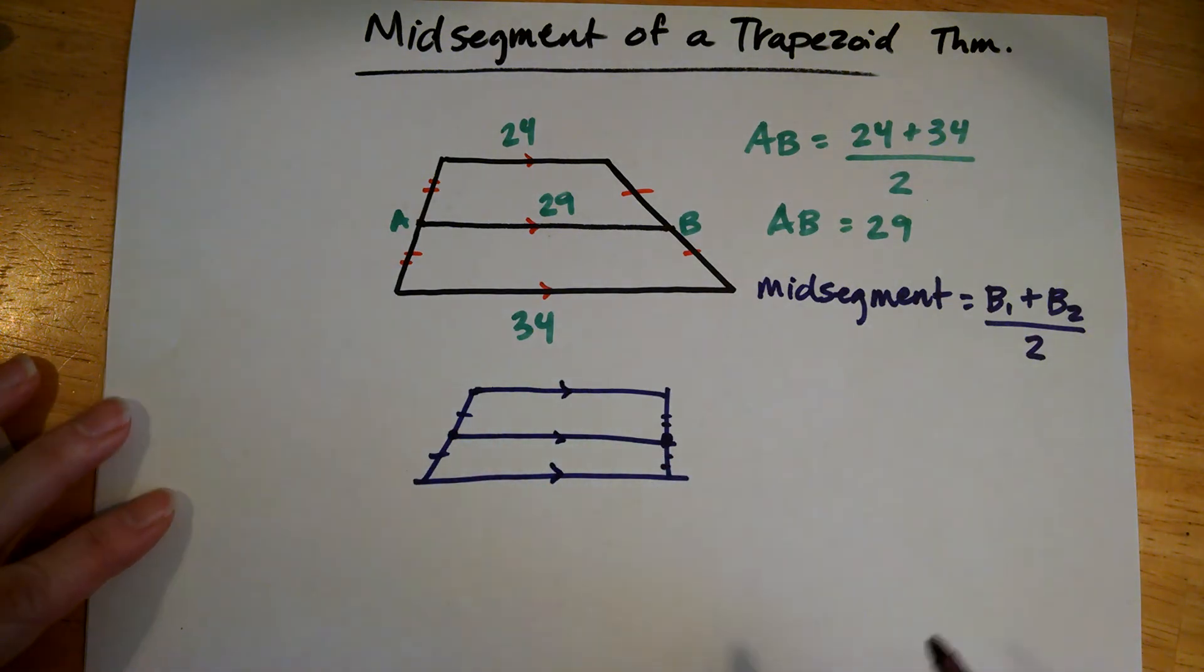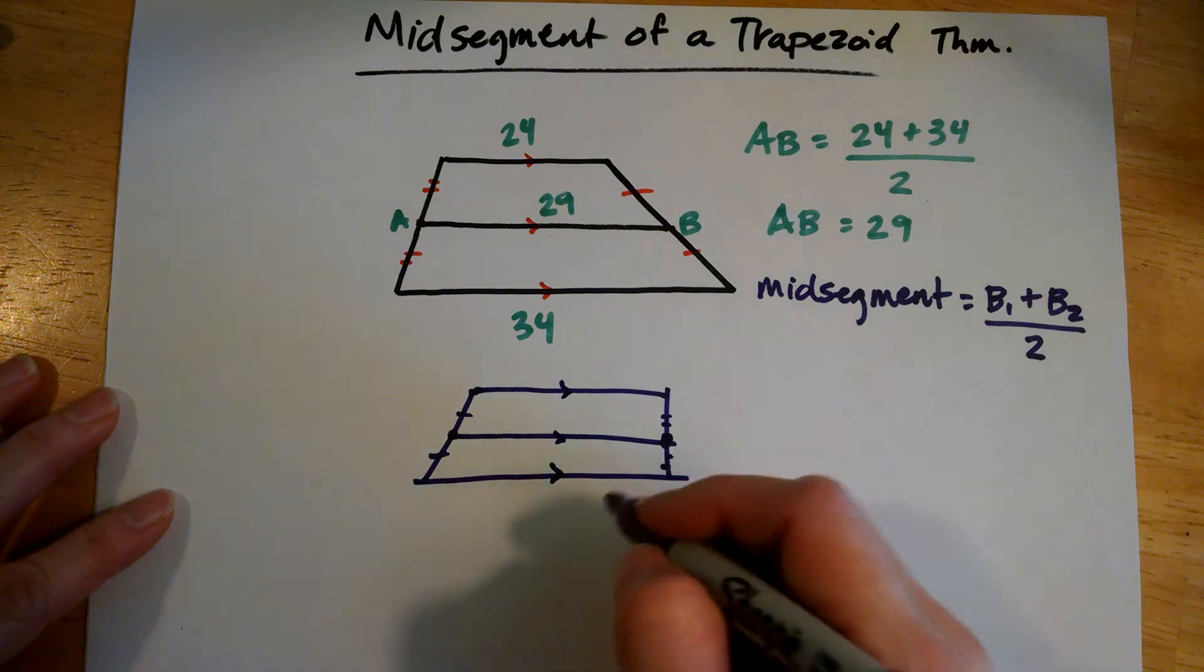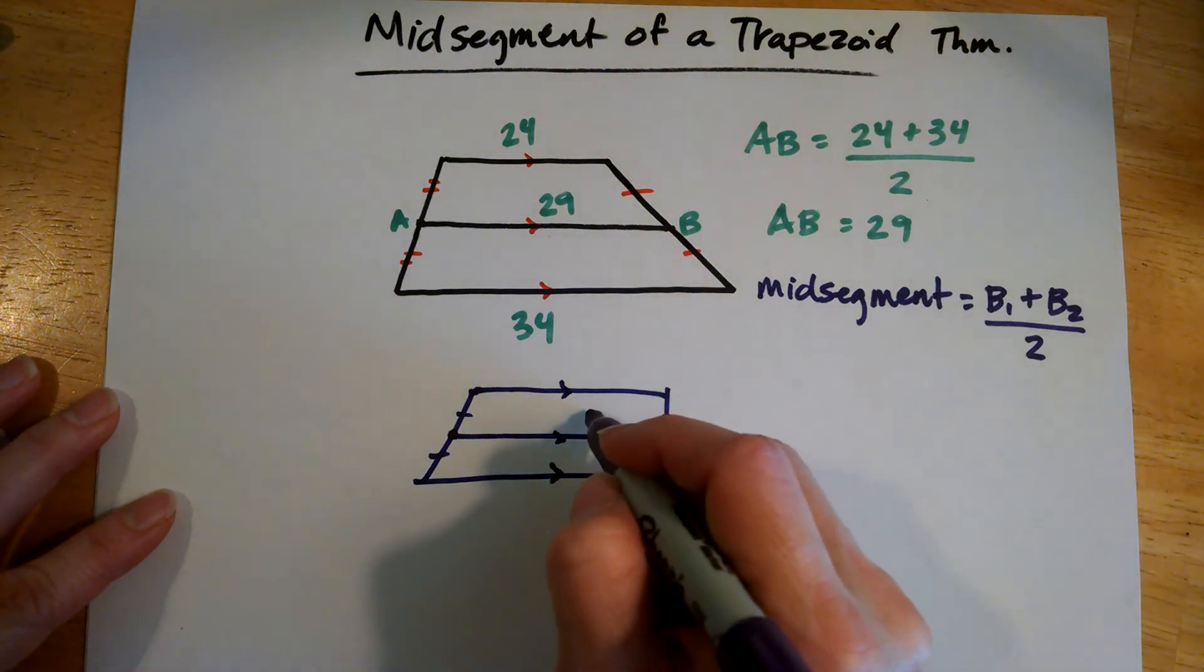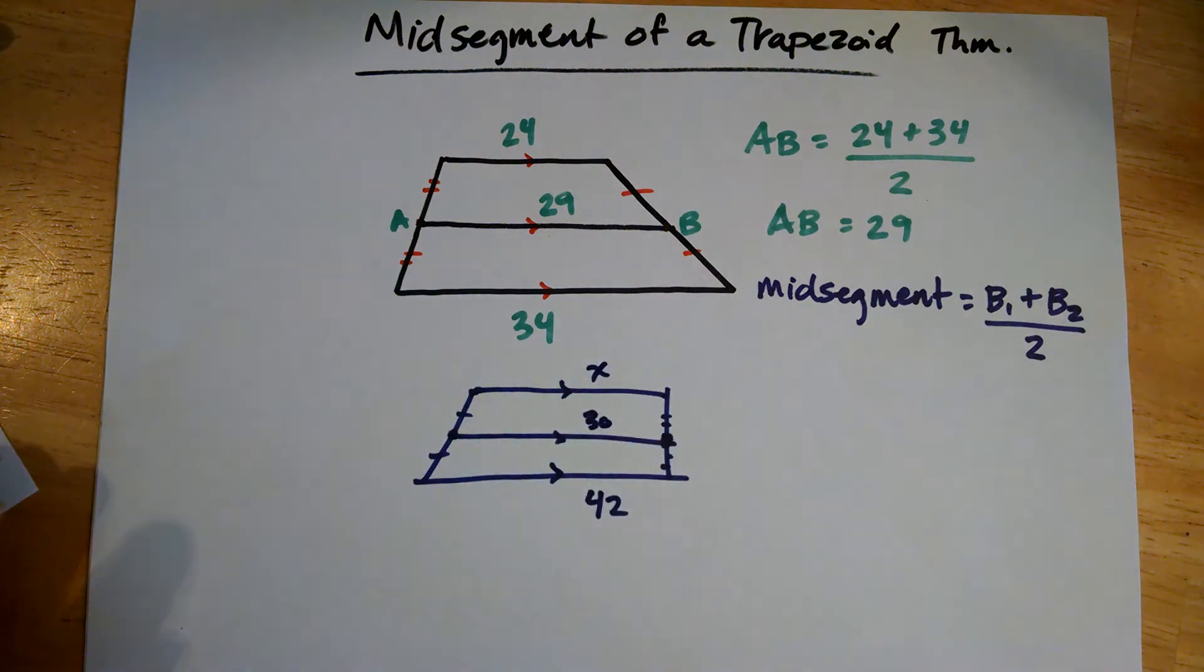So I'm given, let's see, I'll give you maybe 42 for this length. And this one is, we'll say, 30. Then we have to find x.